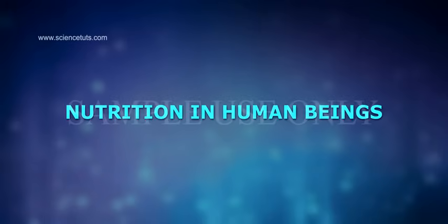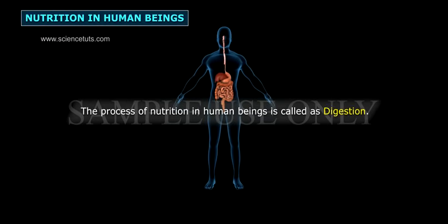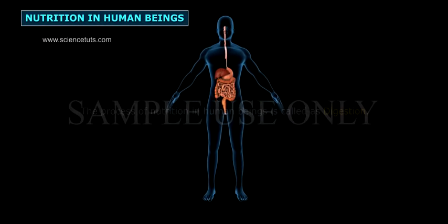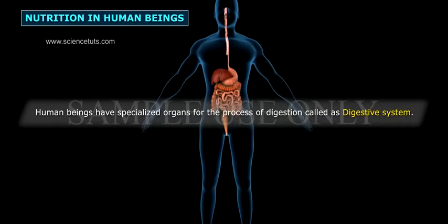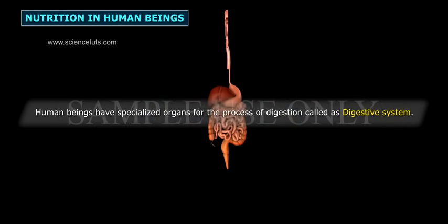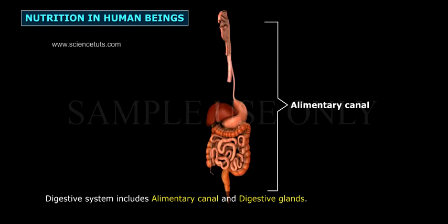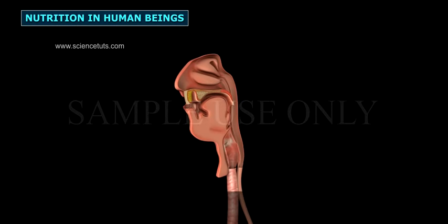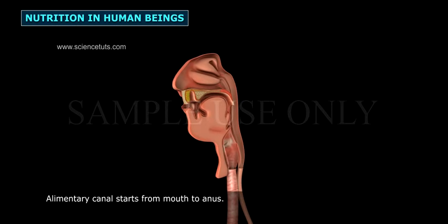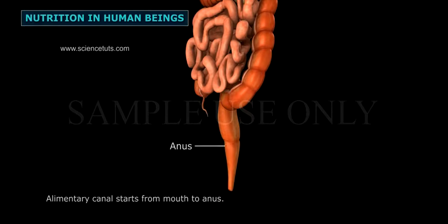The process of nutrition in human beings is called digestion. Human beings have specialized organs for the process of digestion, called the digestive system. The digestive system includes the alimentary canal and digestive glands. The alimentary canal starts from the mouth to the anus.